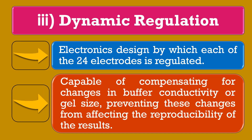The third type is dynamic regulation. Dynamic regulation is the electronics design by which each of the 24 electrodes is regulated. It is capable of compensating for changes in buffer conductivity or gel size, preventing these changes from affecting the reproducibility of the results.